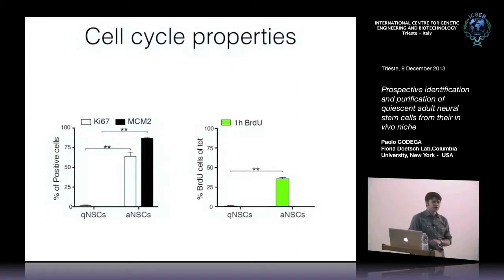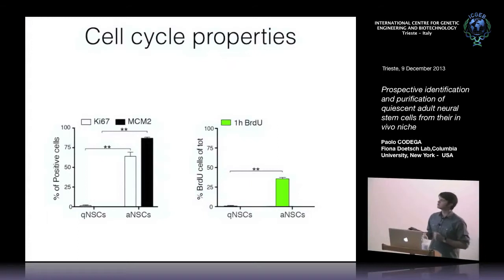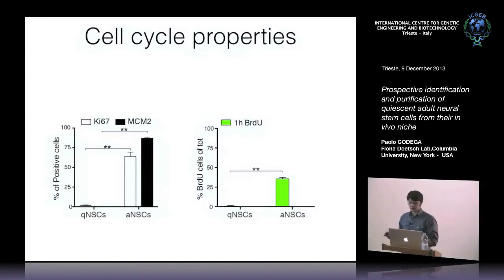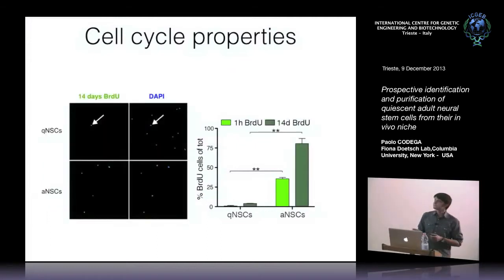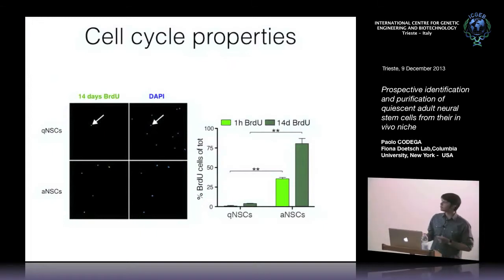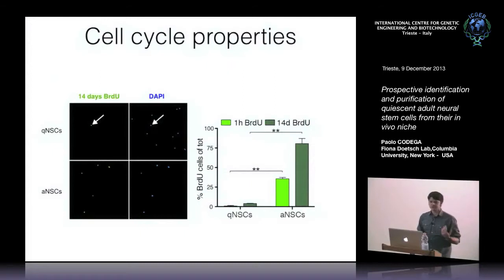After a single BrdU injection to assess how many cells were dividing at a given moment, we found that more than 30% of activated neural stem cells were actively dividing and had incorporated BrdU after one hour, while basically none of the quiescent cells had. When we extended the BrdU pulse by including it in the drinking water, almost all activated neural stem cells were BrdU positive, but also a few quiescent neural stem cells, indicating that this population does divide, but at a much slower rate.